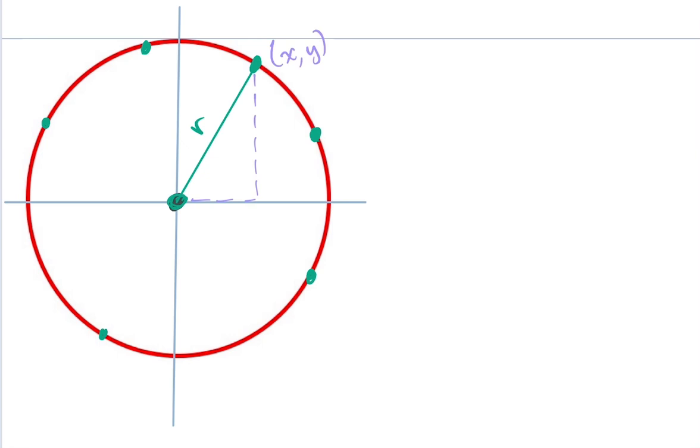So from the origin, this horizontal distance is the same as the x value of this point. And the vertical distance is the same as the y value of that point, since we're centered at the origin.